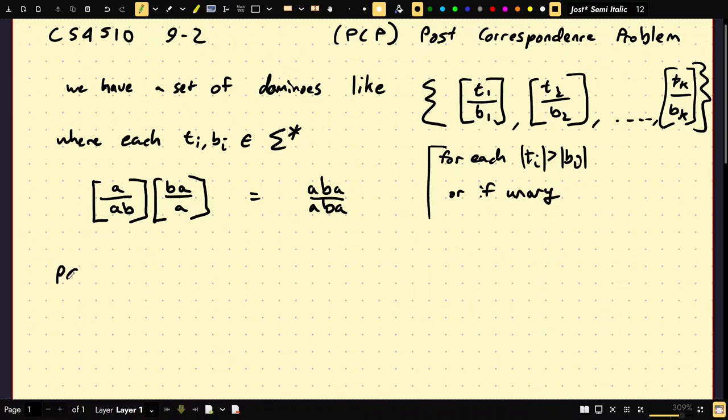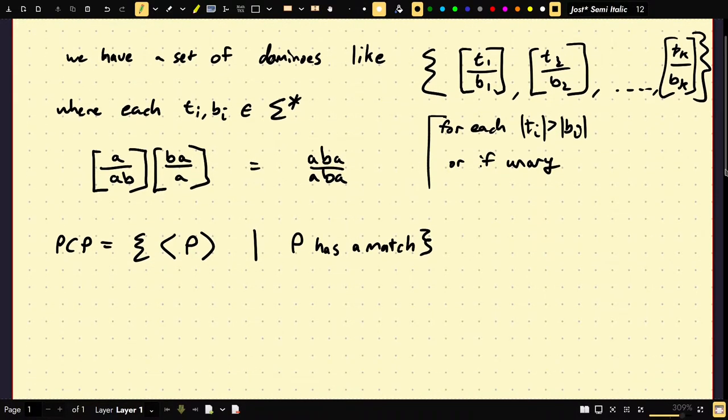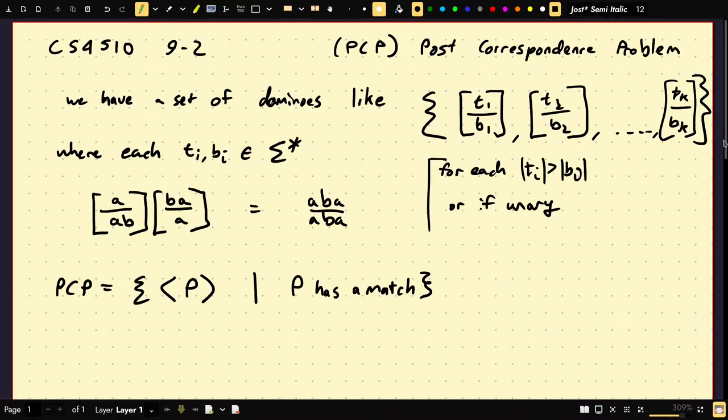The question is, does this set of dominoes have a match? And that's undecidable. So what we're actually going to do, we're going to reduce to ATM with several tricks. We're going to trick the algorithm for whatever would do this into simulating M on W to decide ATM. First the language, the language PCP is what? It's going to be an instance of a problem P, a set of dominoes, such that P has a match.